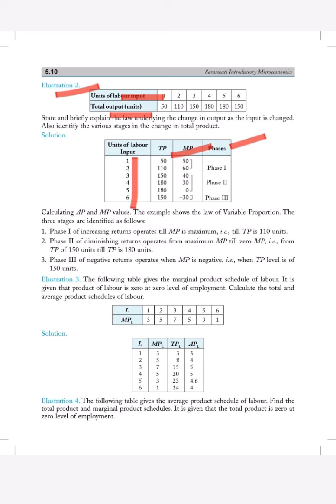Total units will be here. Total product will be here. We have to find out marginal product. So this is phase 1. 100 minus 50 will be 50. Then 110 minus 50 will be 60. 150 minus 110 will be 40. Then 180 minus 150 will be 30. 180 minus 180 will be 0.